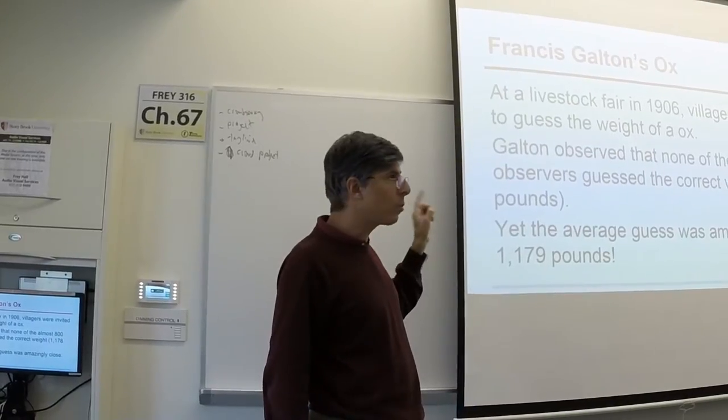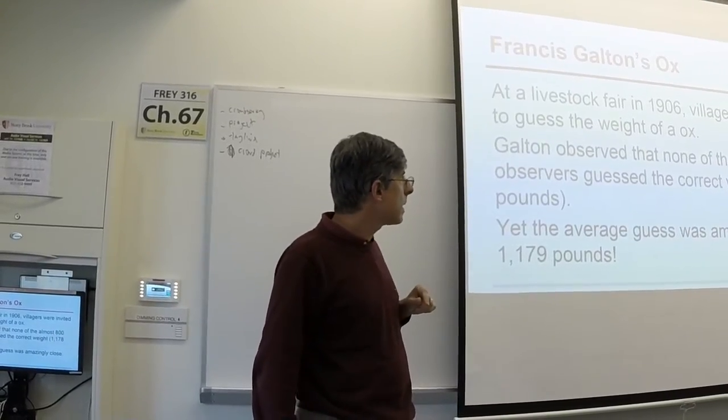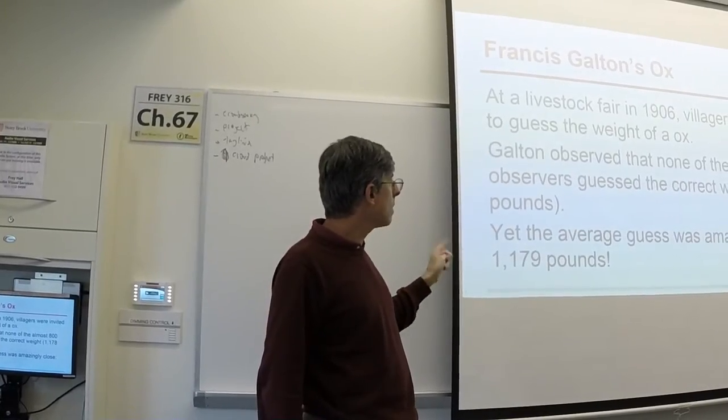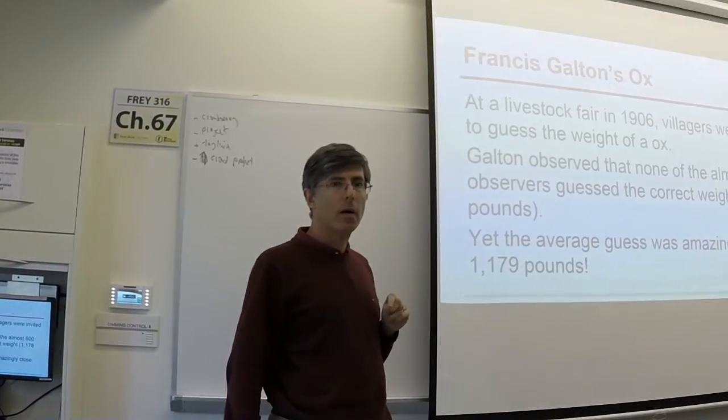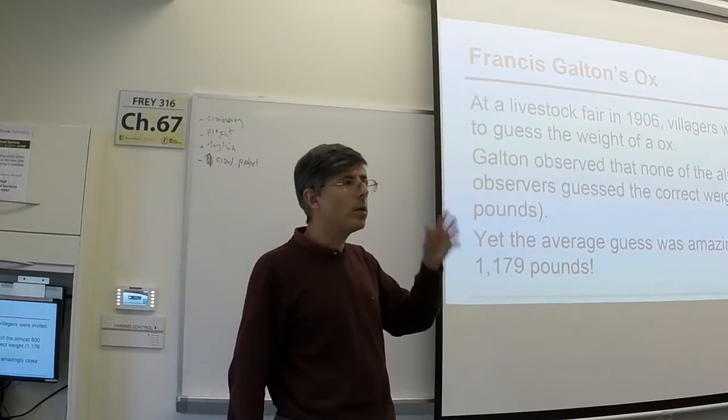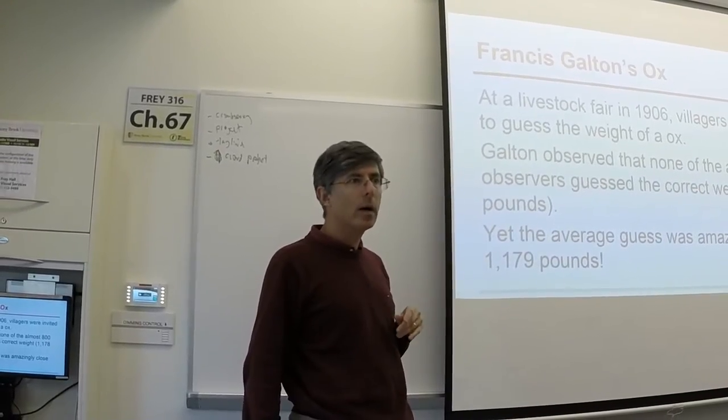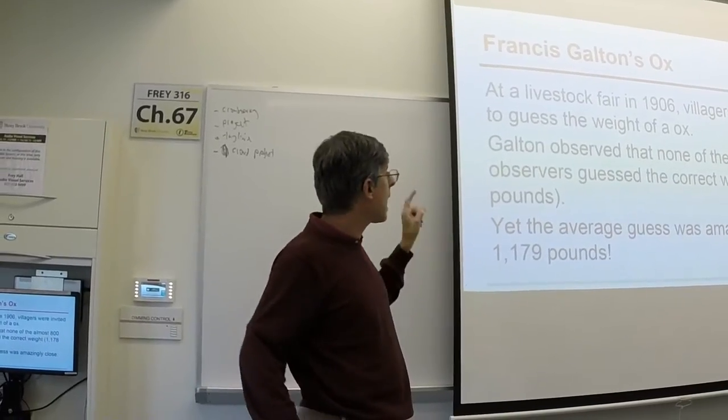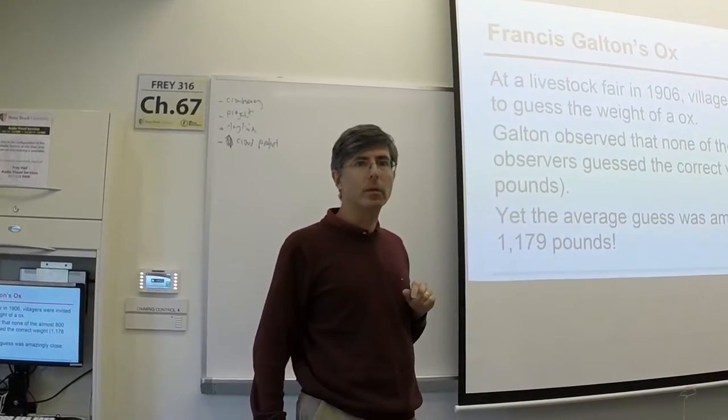None of them guessed the correct weight of the ox. But he found that the average weight of the ox was within one pound of the right weight. So no single person knew about what the weight of the ox was. But somehow the collective wisdom of the crowd enabled an accurate estimation of these kinds of things.